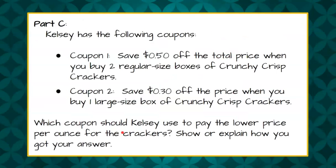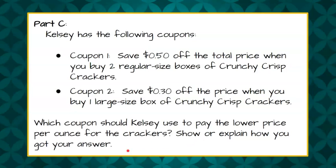Now Part C. Kelsey has the following coupons. Coupon one: she will save 50 cents off the total price when she buys two regular size boxes of Crunchy Crisp Crackers. Coupon two: she saves 30 cents off the price when she buys one large box of Crunchy Crisp Crackers. Which coupon should Kelsey use to pay the lower price per ounce for crackers? Show or explain how you got your answer.